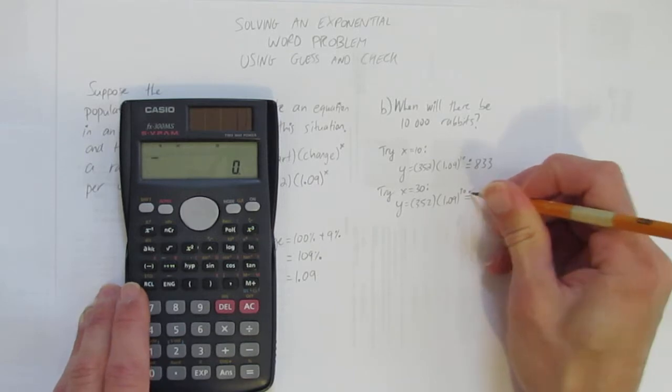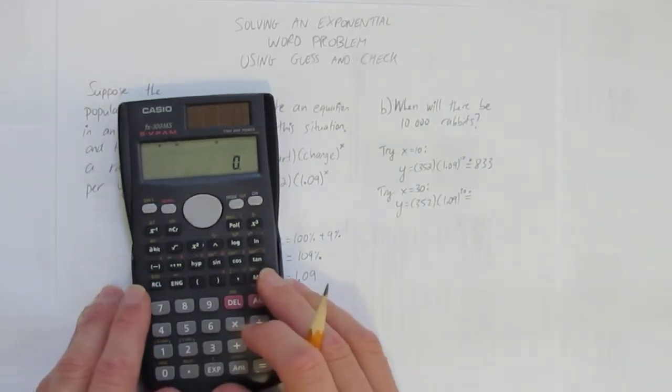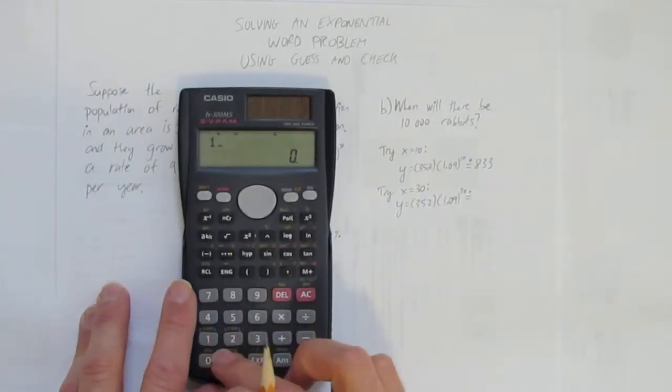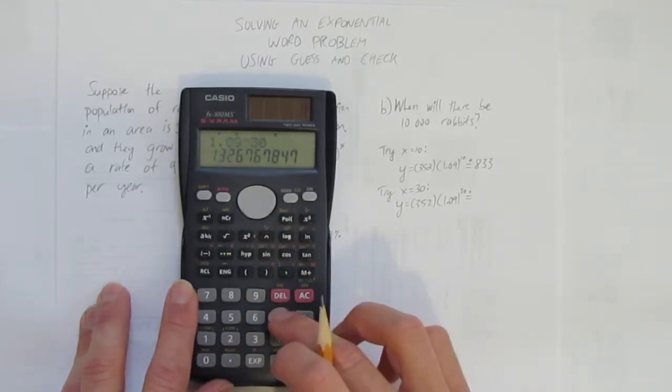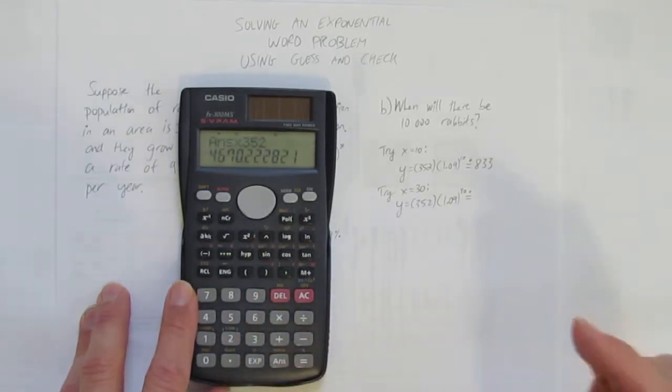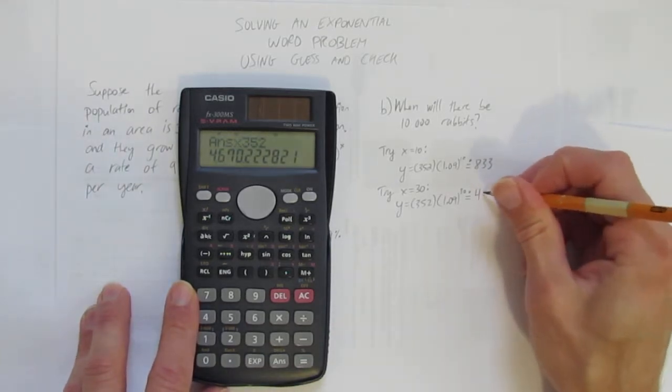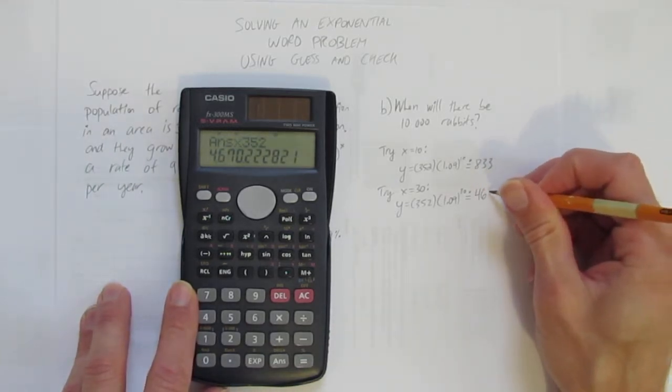And I'm going to put a rounding dot for good measure. Alright, 1.09 to the power of 30 equals times 352. And I get, a lot closer. 4,670 rabbits approximately.